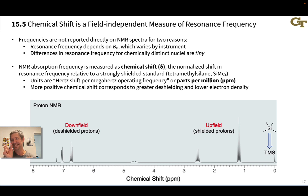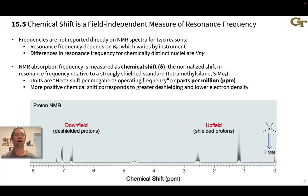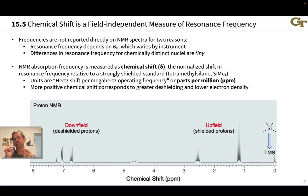The other reason has to do with the fact that these differences in frequency due to electronic countering magnetic fields via electron density are tiny — very tiny relative to the operating frequency. So while your operating frequency might be in megahertz, your differences in frequency due to protons in different chemical environments may be on the order of tens or hundreds of hertz. So very, very tiny differences.